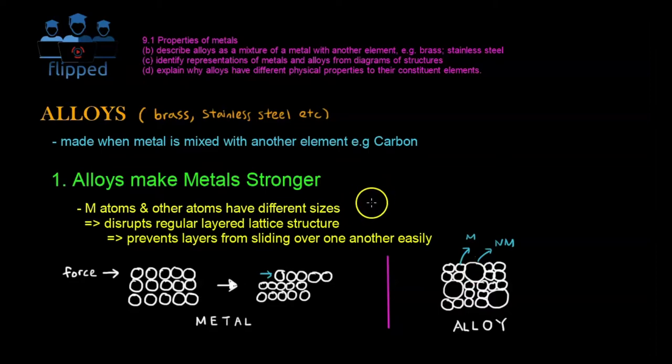Let's take a look at the explanation. Because metal atoms and other atoms have different sizes—as you can see the small ones are the metal, big ones are the non-metals—this disrupts the regular layered lattice structure. As in this one is regular layered, right, but this is not, this is a bit haphazard.